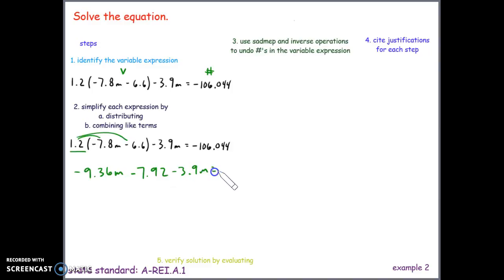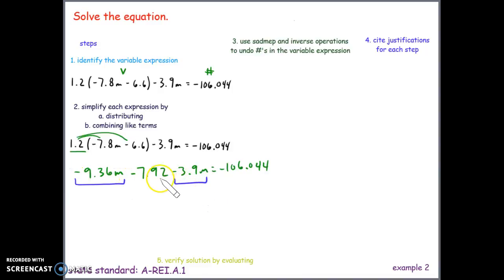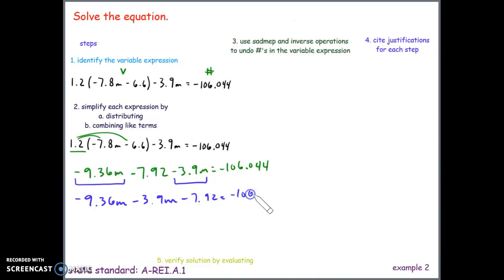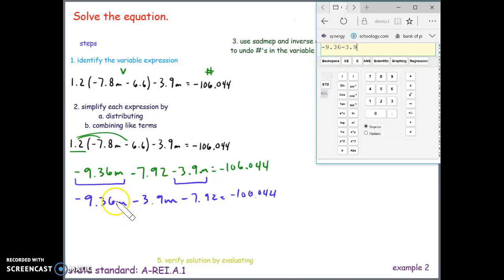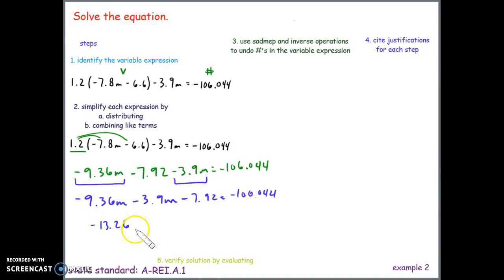After distributing, we have negative 9.36m minus 7.92 minus 3.9m equals negative 106.044. We have two like terms with m. Before combining them, we commute to put them next to each other. Using the calculator, negative 9.36 and negative 3.9 combine to give negative 13.26. So we have negative 13.26m minus 7.92 equals negative 106.044. Both expressions are now fully simplified.